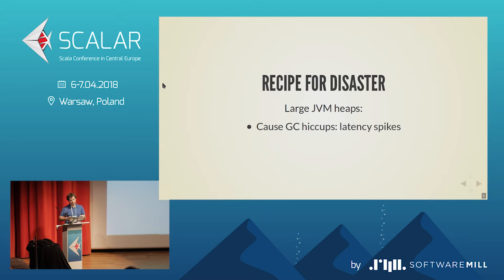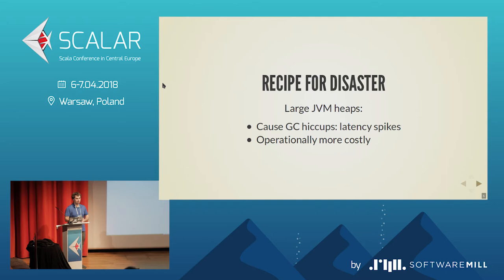It might happen that your garbage collector will start behaving weirdly, or your application throughput will go down, and it's operationally more costly. Because if you are a small start-up, buying a 32 gigabyte RAM machine on Amazon is quite pricey.